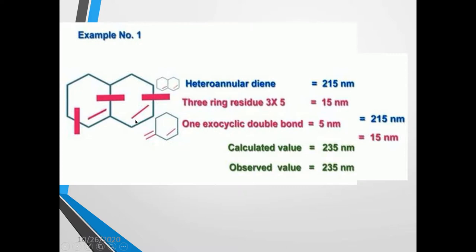Since it is a heteroannular diene, you can see here this double bond is attached to the first ring which is outside the ring structure — hence this structure is considered as an exocyclic double bond, and 5 nanometers is added to the base value. In all: one heteroannular diene structure — base value 250 nanometers; three ring residues — 5 nanometers each, for a total of 15 nanometers; and one exocyclic double bond — 5 nanometers added. The calculated lambda max value for this molecule is 270 nanometers, and the same molecule has observed 235 nanometers as the lambda max with UV spectrometer. This is how the Woodward-Fieser rule is applied for the calculation of lambda max from the given structure.